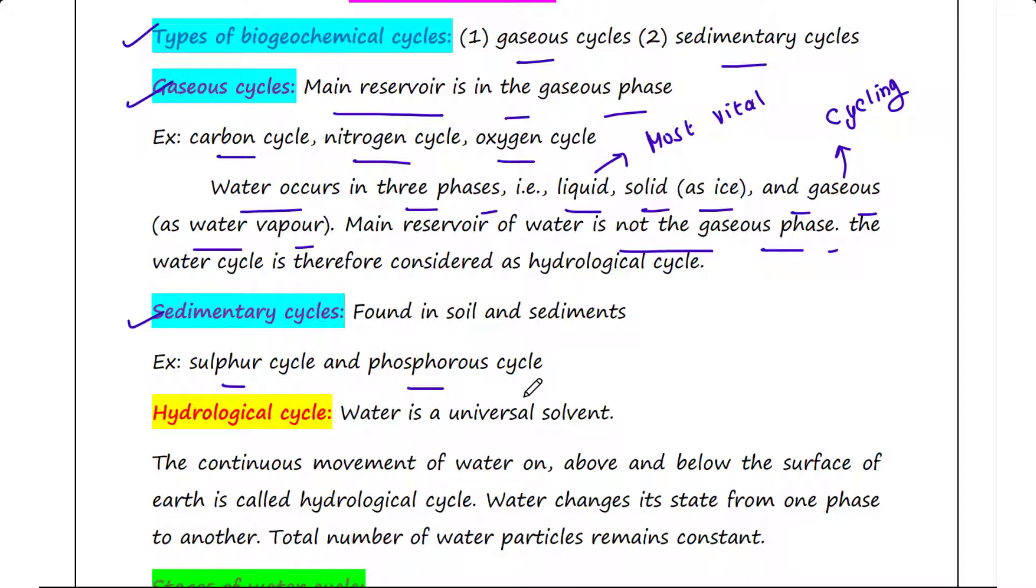What is sedimentary cycles? The cycles of sulfur and phosphorus are classified under sedimentary cycles since they are found in soil and sediments. Water is a universal solvent, therefore its importance is obvious to everybody.